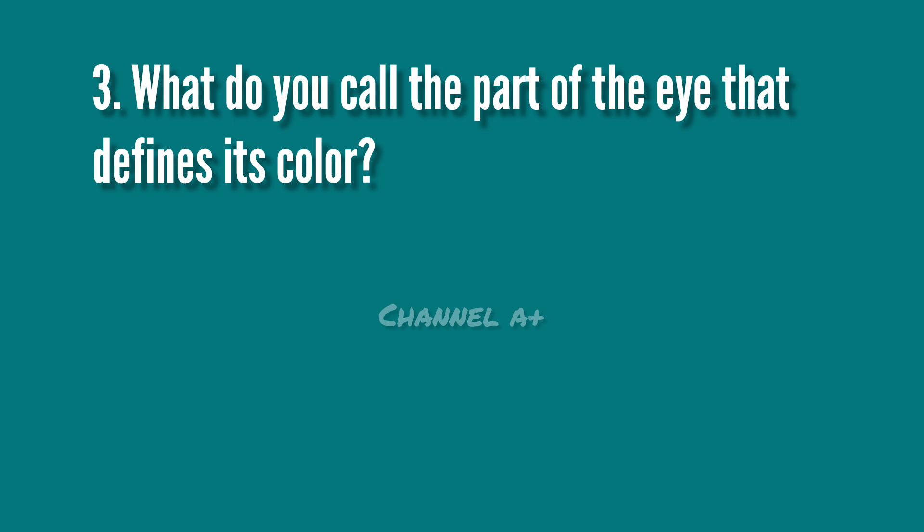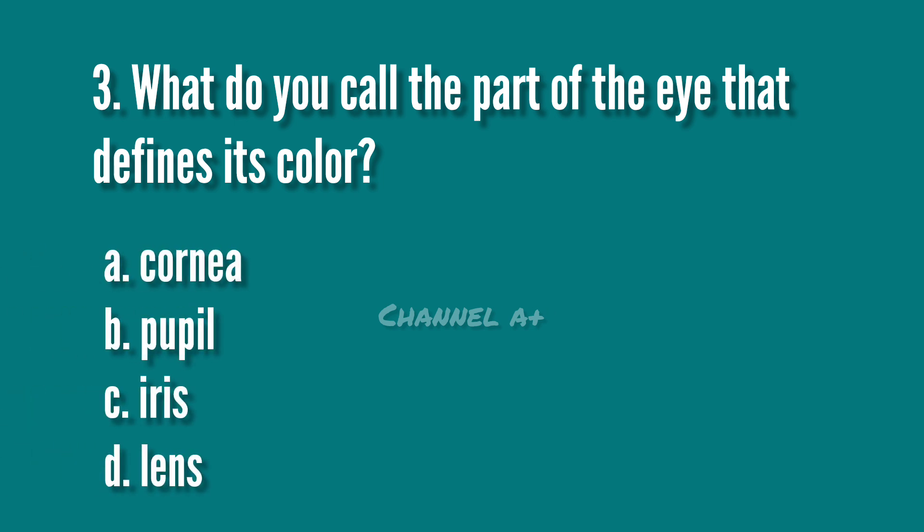What do you call the part of the eye that defines its color? A. Cornea. B. Pupil. C. Iris. D. Lens. The answer is C. Iris.